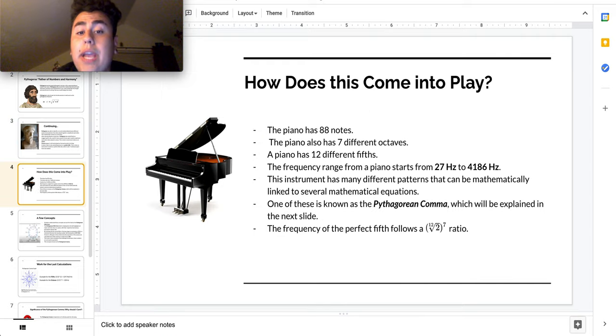How does this come into play? The piano has 88 notes. The piano also has seven different octaves. A piano has 12 different fifths. The frequency of a piano starts from the very left key from 27 hertz, so like a really low sound, all the way to the furthest right key to 4186 hertz. This instrument has many different patterns that can be mathematically linked to several mathematical equations.